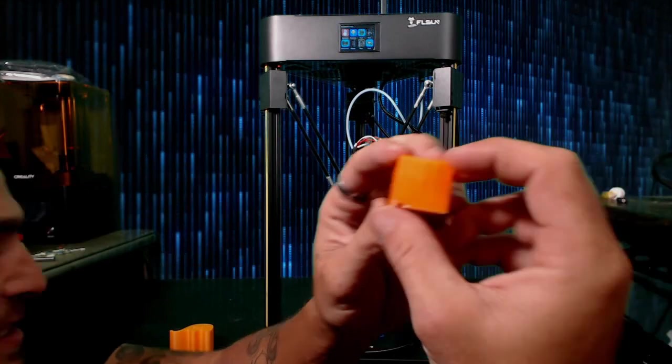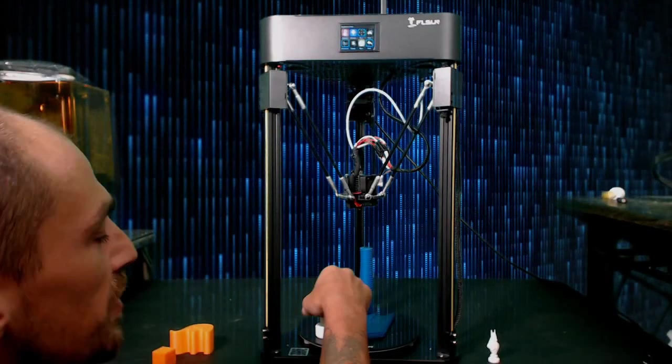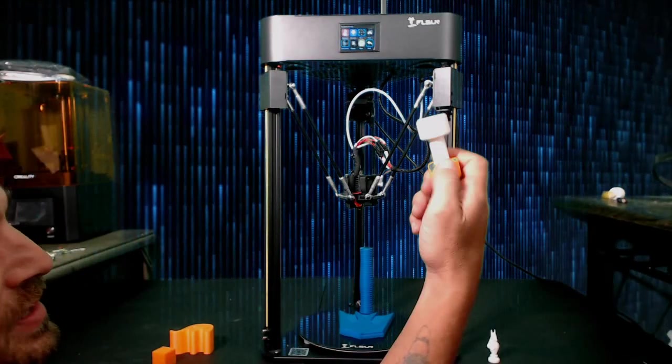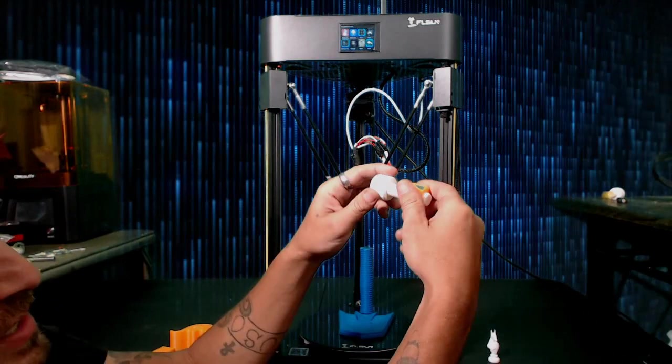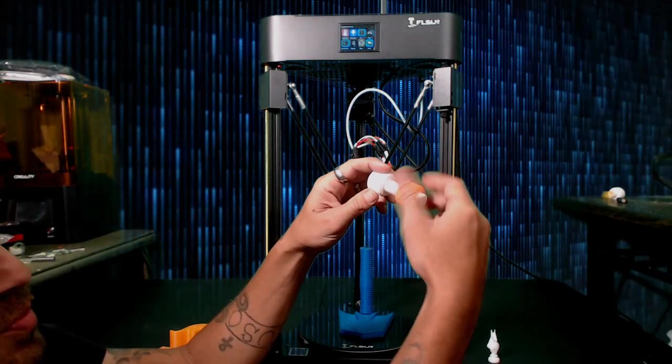So once I tightened everything up, things were going phenomenally and that's how I was able to print this guy. This was one of the other test files that came with it and it is just a threaded nut and bolt.